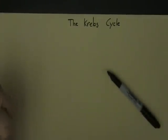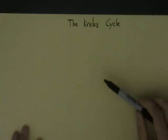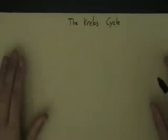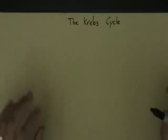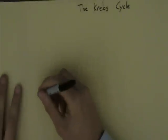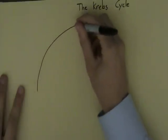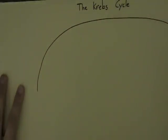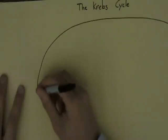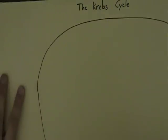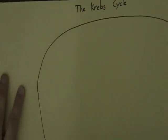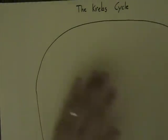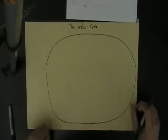The Krebs cycle follows after glycolysis. I'm going to start off — it'll help you to take notes on a sheet of paper, just like in the other videos. I'm going to start off by drawing a really large mitochondria, a long oval shape. Let me just zoom out so you can see what I'm doing here.